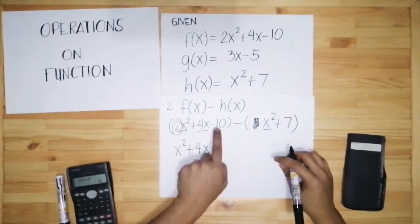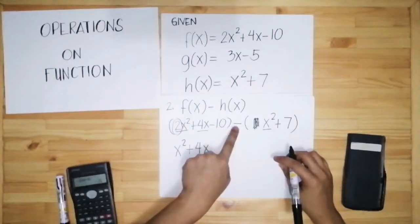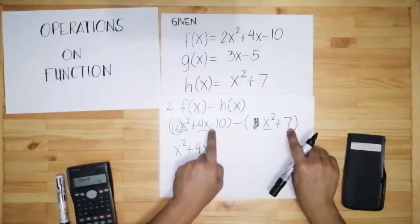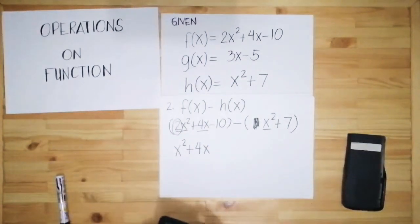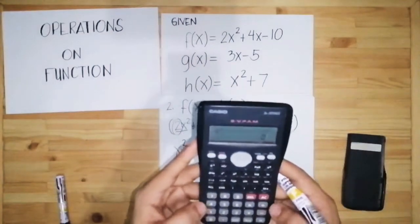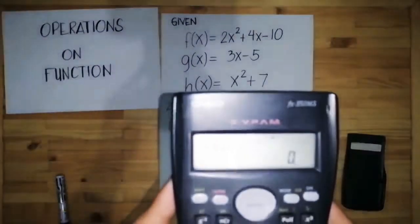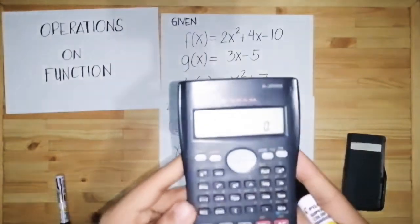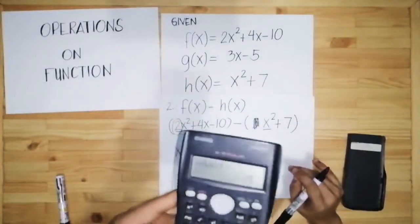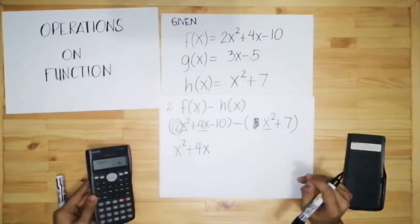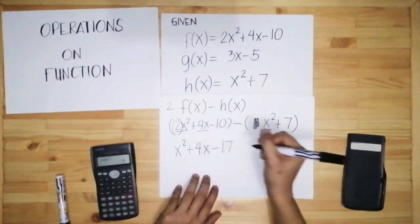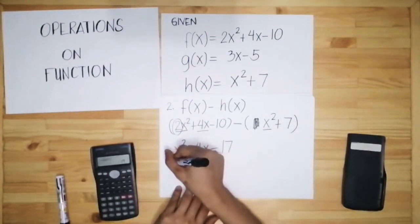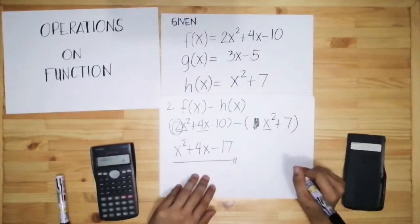Next, negative 10 minus 7. Using a calculator: negative 10 minus 7 equals negative 17. So the final answer is x squared plus 4x minus 17.